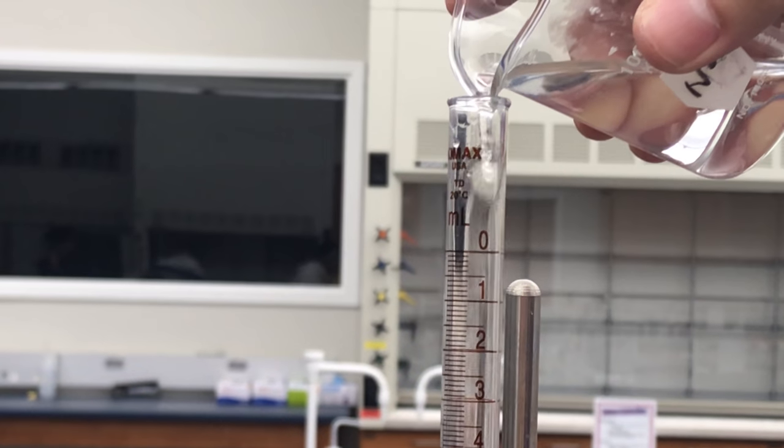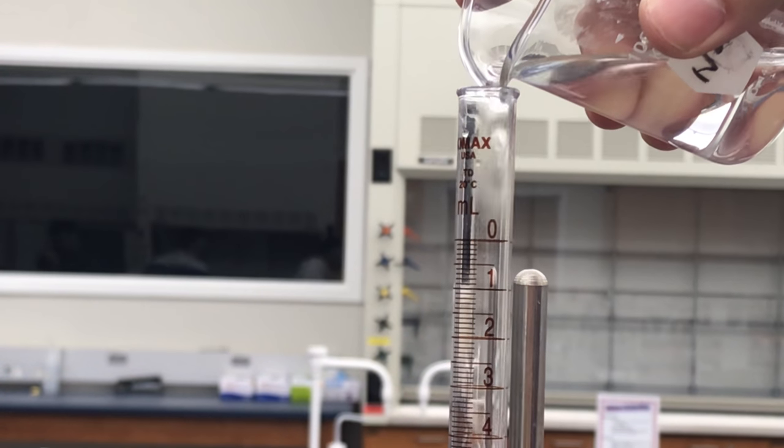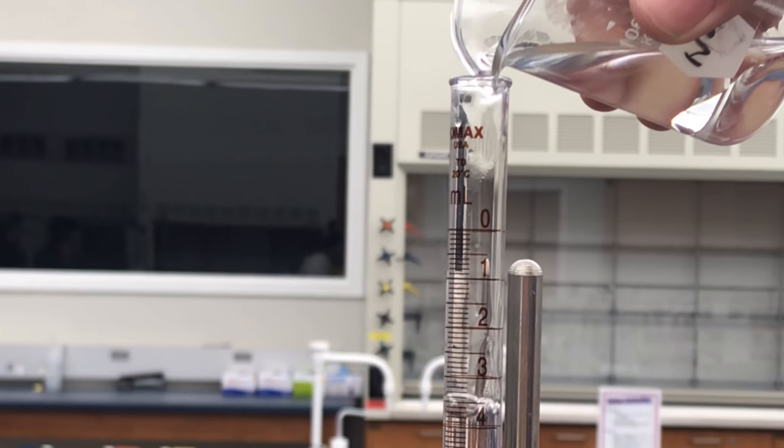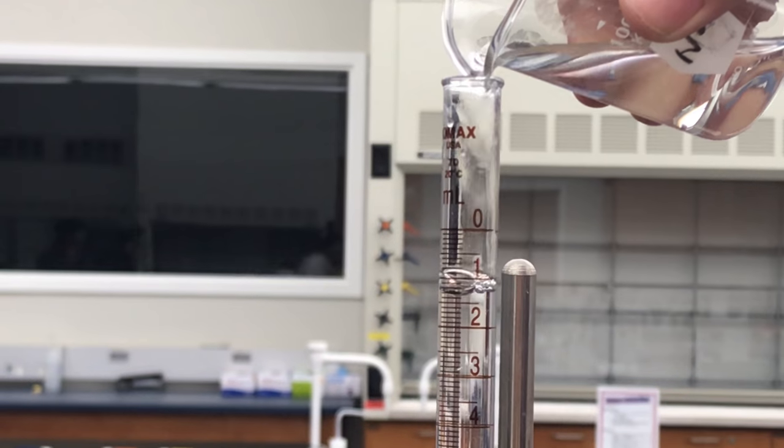Pour a bit of the known solution into a waste beaker to eliminate excess air in the tip of the burette. Record the initial volume of the known solution.